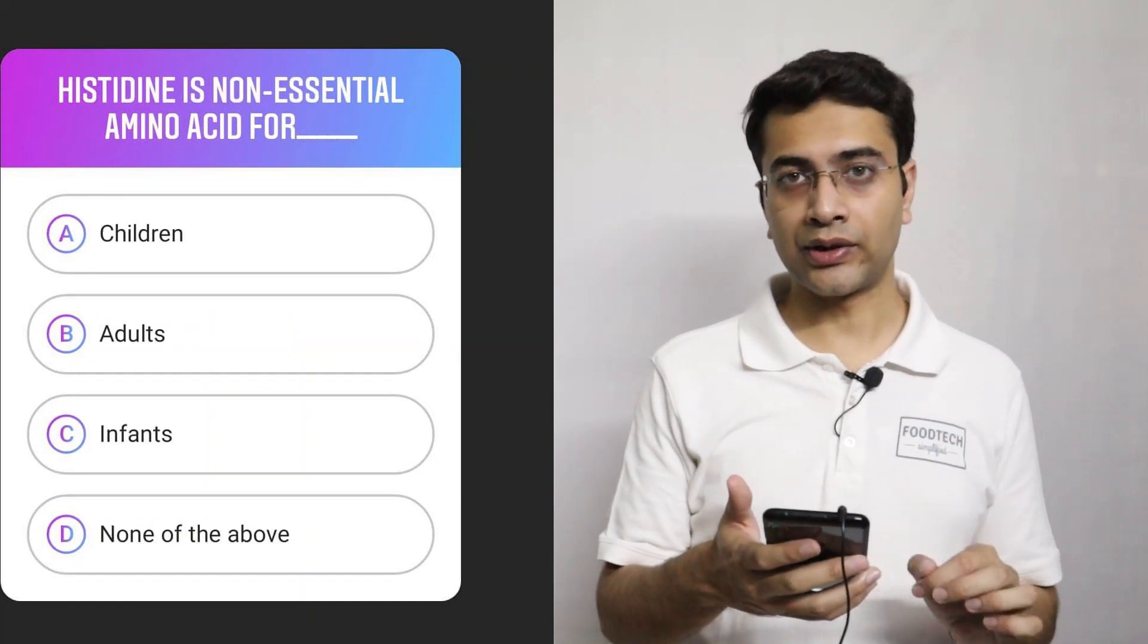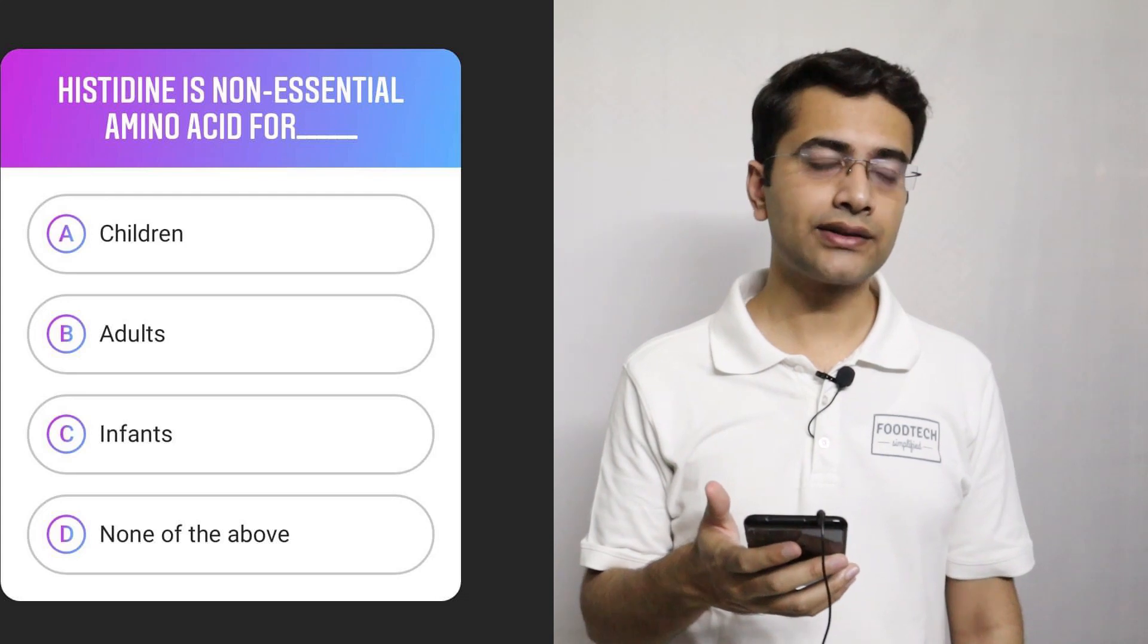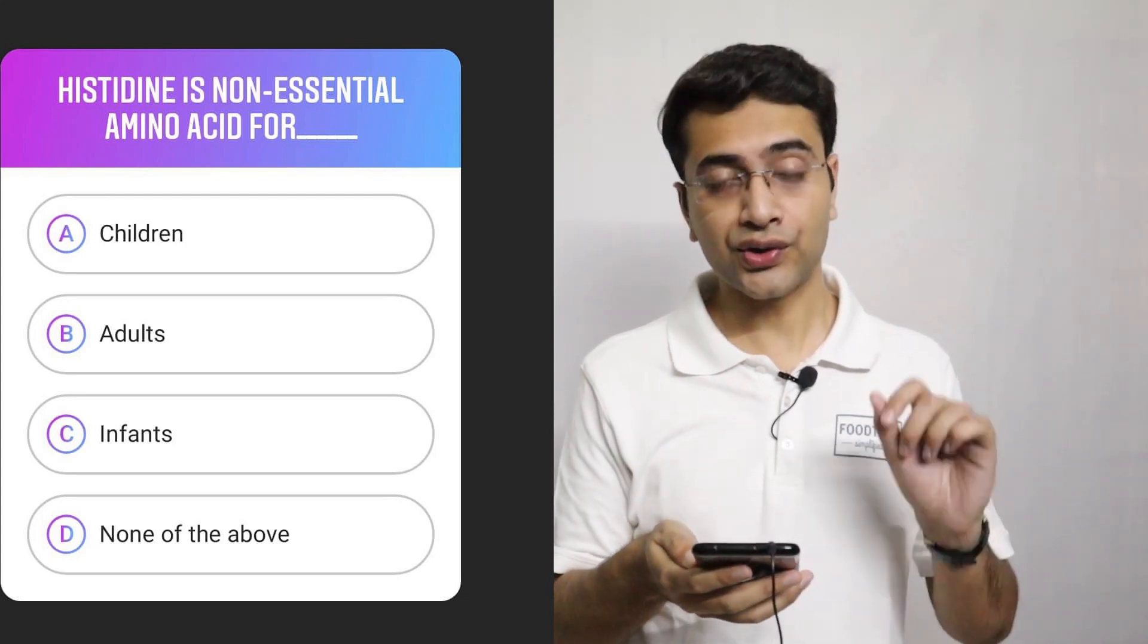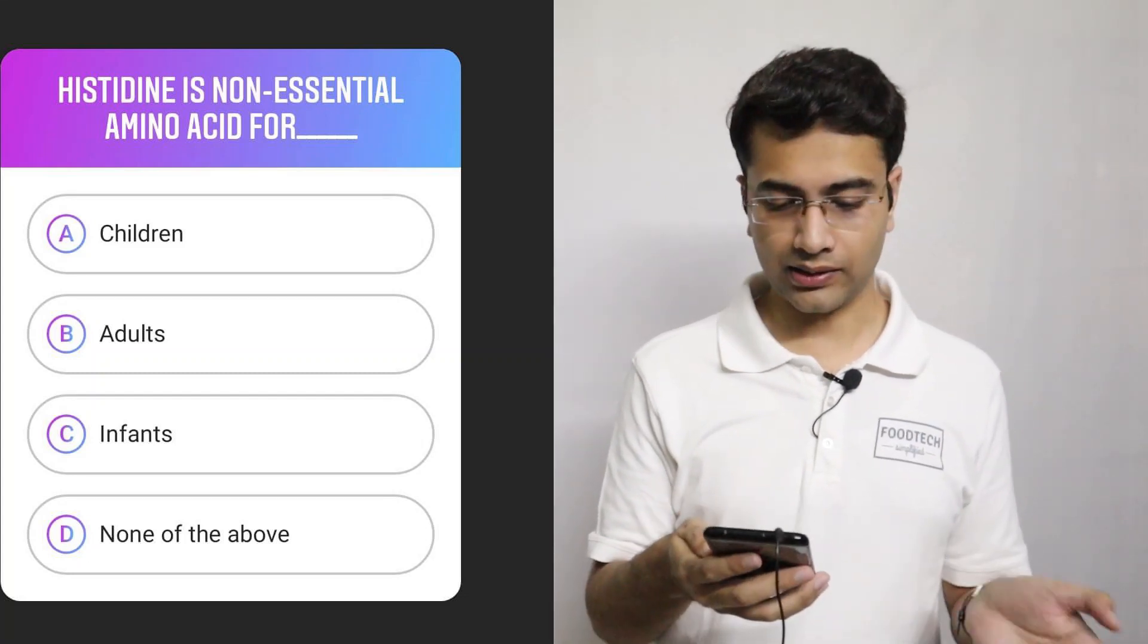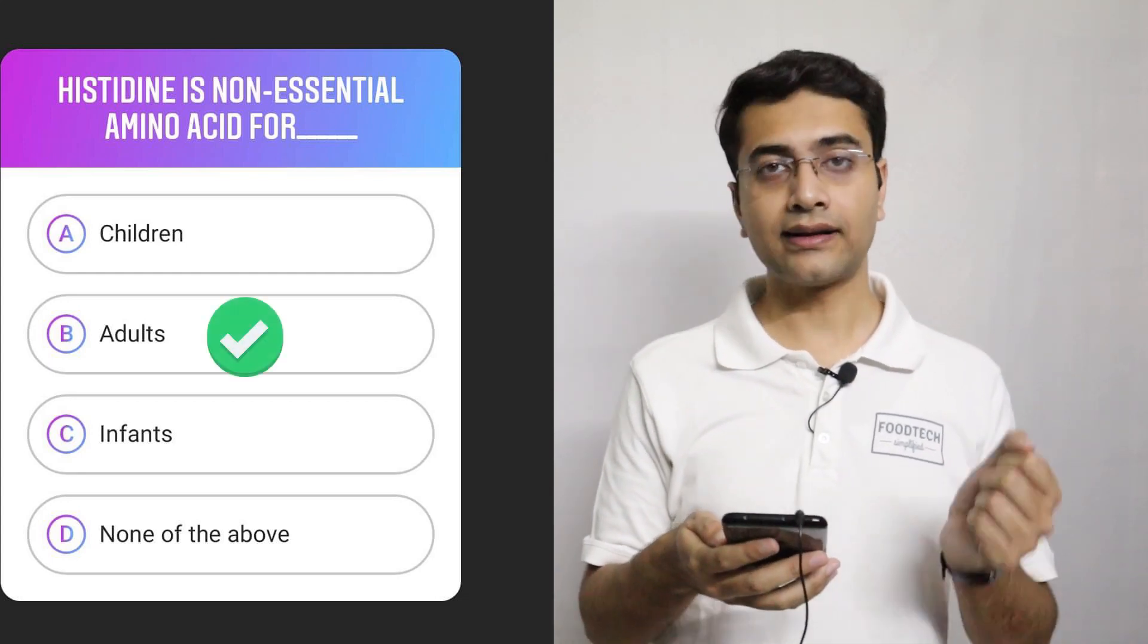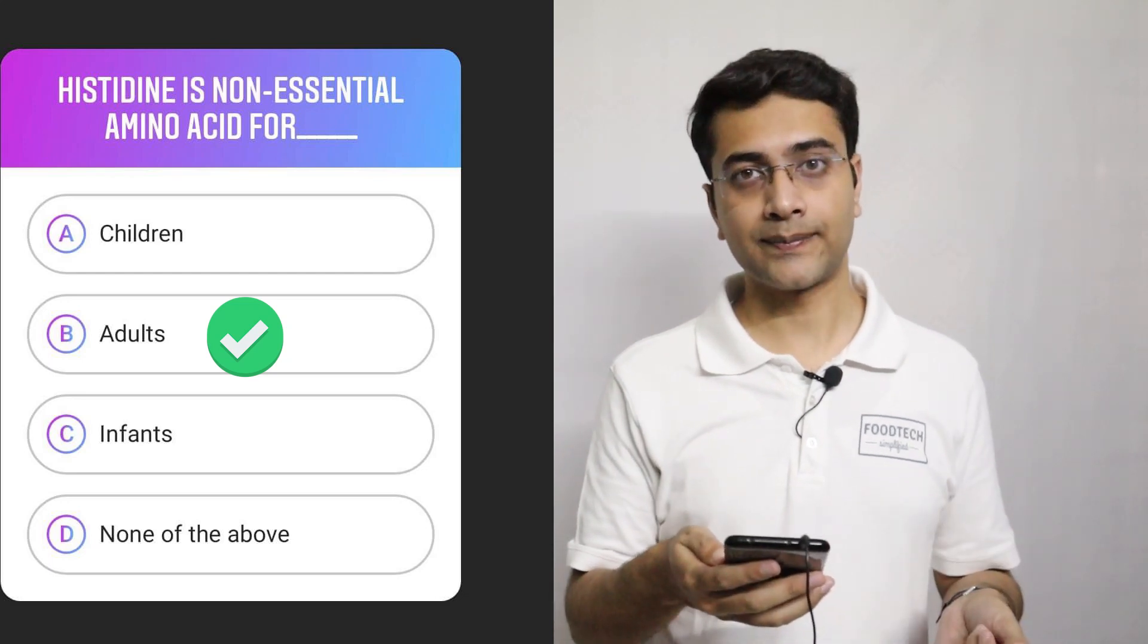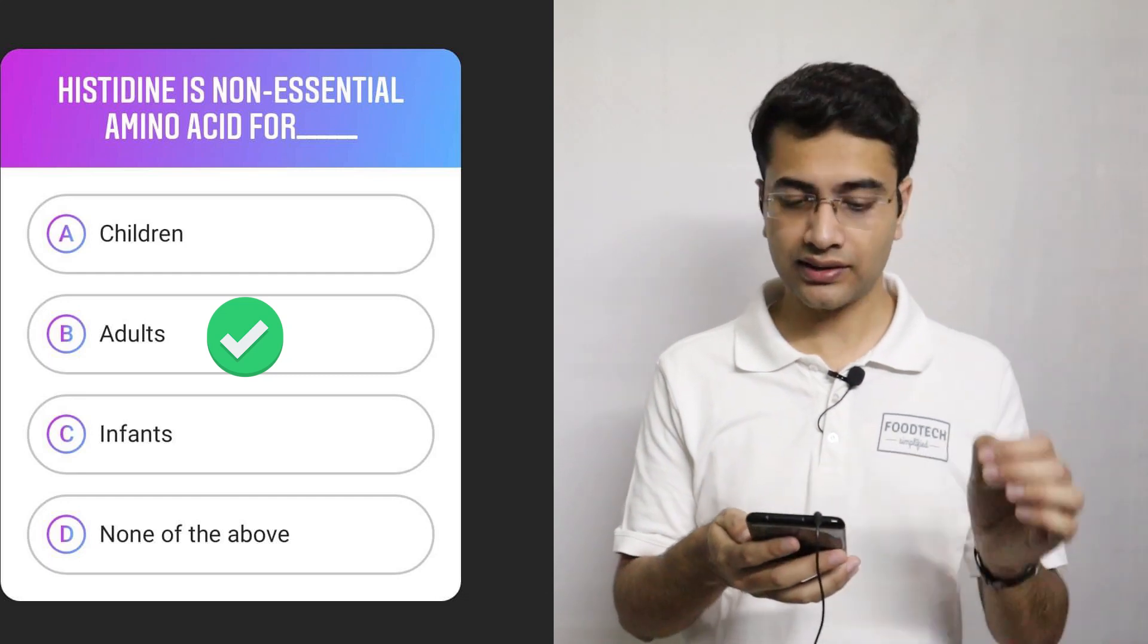Histidine is non-essential amino acid for dash. So non-essential, that means our body can manufacture it. So is histidine non-essential for children? Is it non-essential for adults? Is it non-essential for infants or none of the above? So histidine is non-essential for adults. Adults can manufacture or synthesize histidine in their bodies. They don't need to consume histidine from their diets. But children need it.